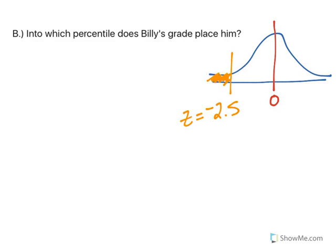Percentile is the proportion or the probability to the left of that particular score. So when I look at the table, negative 2.5 z-score leads me to an area under the curve of 0.0062.